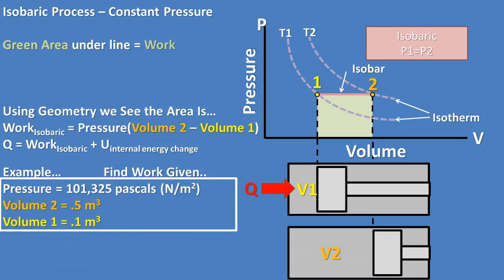Now, let's do an example problem to find work. We are given an isobaric process with pressure of 101,325 newtons per meter squared, volume two of 0.5 meters cubed, and volume one of 0.1 meters cubed. Plugging in our values into the area under the isobar or total work formula of pressure times the change in volume, we get 40,530 joules of work done on the piston.